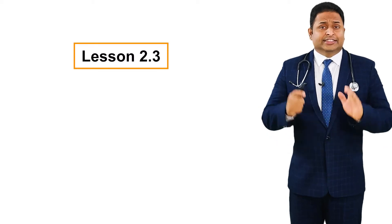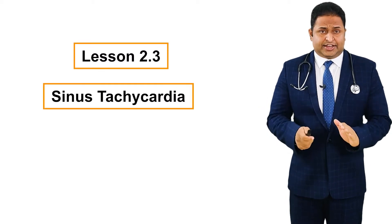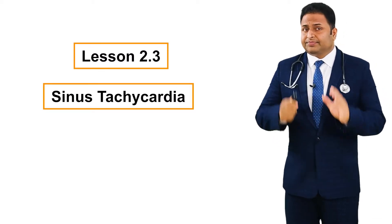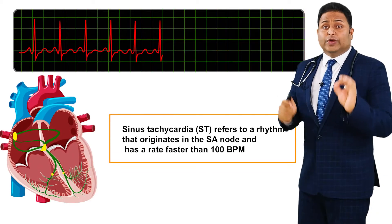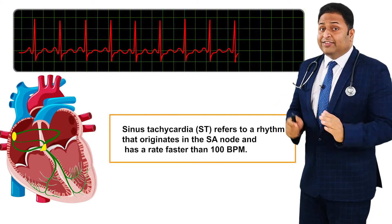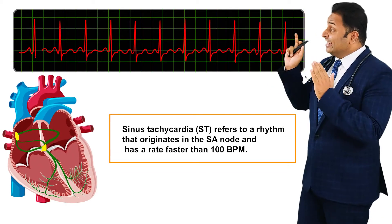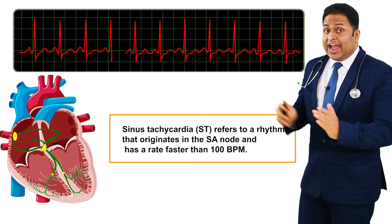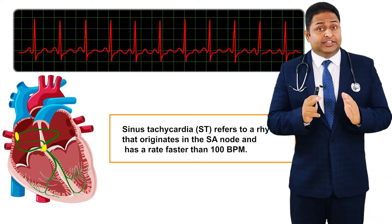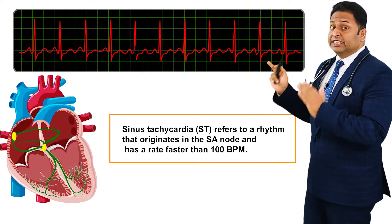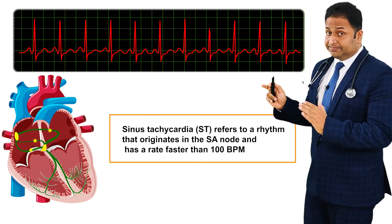Lesson 3: sinus tachycardia. What is sinus tachycardia? Sinus tachycardia refers to a rhythm that originates in the SA node and has a faster rate than 100 beats per minute.